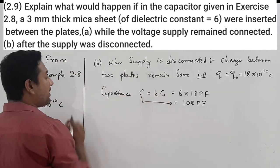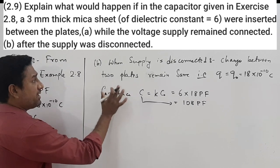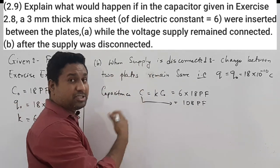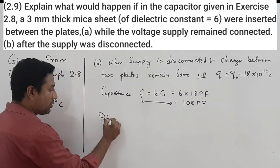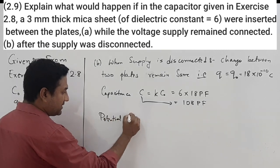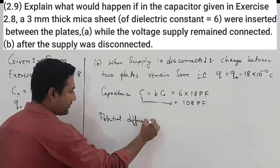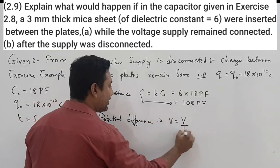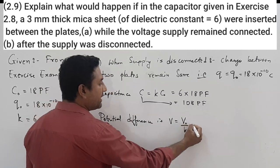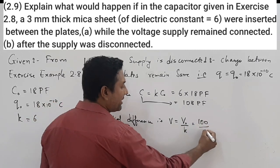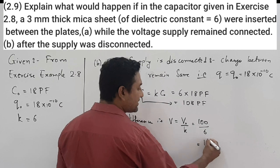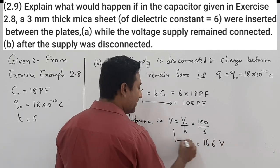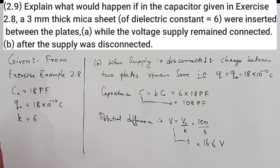The charge is known, but since the supply is disconnected, the new potential difference changes. The new potential is V = V₀ / k. Initial voltage was 100 volts divided by k = 6, giving a new potential of 16.6 volts. That is the new potential when supply is disconnected.